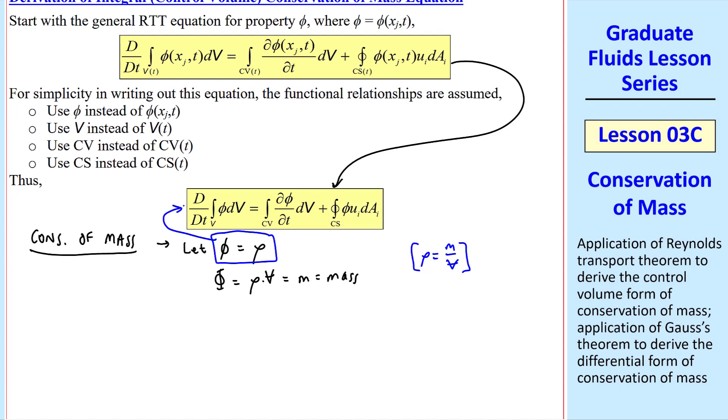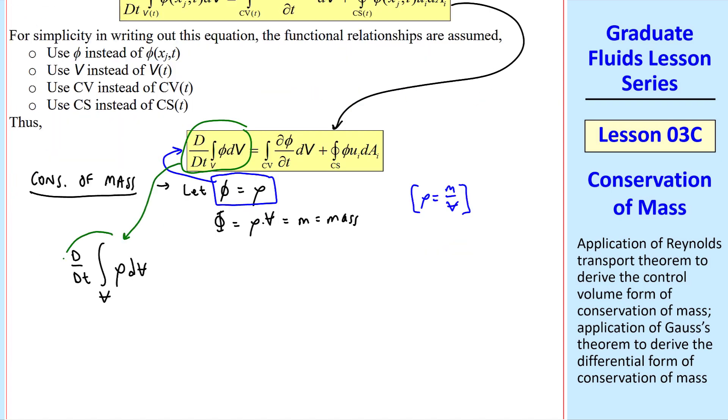Plug this into our equation. First, the left-hand side, but we recognize that this is the total mass in the volume. So this left-hand side becomes dm/dt. And I'll define m as the total mass in volume v.